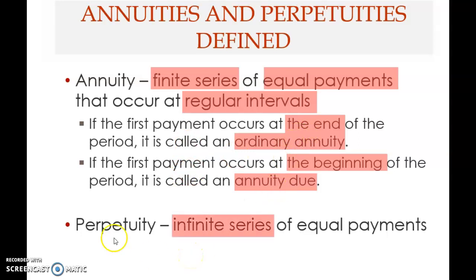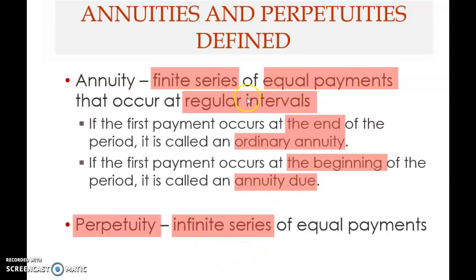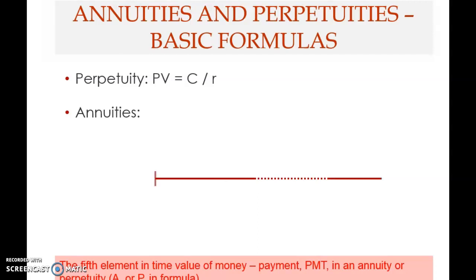We also have perpetuity. Perpetuity differs from annuity in one aspect only: annuity is finite, meaning limited to a time period, while perpetuity is infinite — you have a starting point but no ending point. It is a continuous series of equal payments at regular intervals, with equal payments and regular intervals as common features.